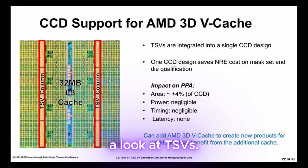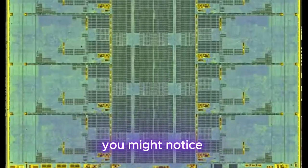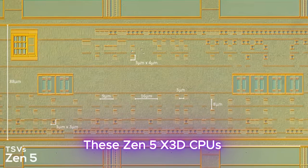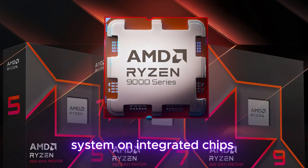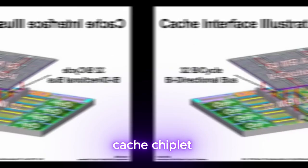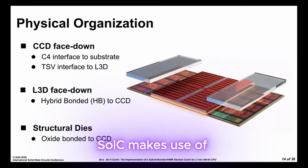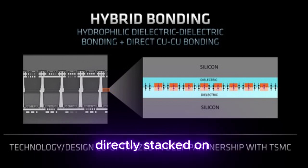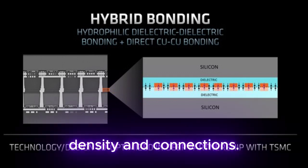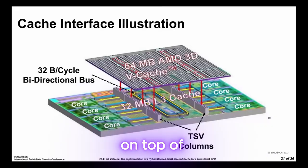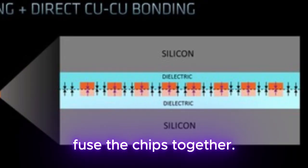Moving on, we're taking a look at TSVs. If you take a closer look at the chip, you might notice some minuscule gaps in the L3 cache block. The Zen 5 X3D CPUs use TSMC's System on Integrated Chips (SOIC) to 3D stack the cache chiplet on top of the CCD. SOIC makes use of hybrid wafer bonding, where two chips are directly stacked on top of each other, improving density and connections. The CCD and chiplet both have TSV copper pads; the chips are placed on top of each other so the pads align, then slowly heated to fuse the chips together.